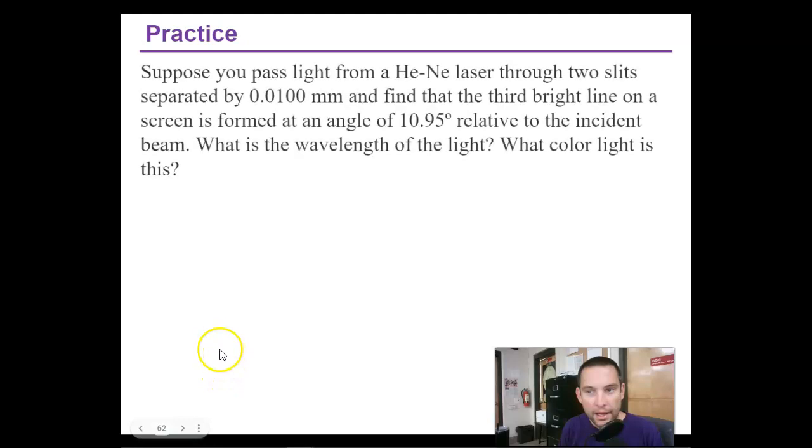Alright, on to a practice problem. Suppose you pass light from a helium neon laser through two slits separated by 0.01 millimeters and find the third bright line on the screen is formed at an angle of 10.95 degrees relative to the incident beam. What is the wavelength of the light? What color light should this be?